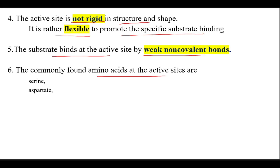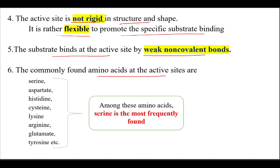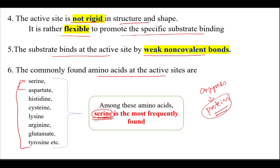The commonly found amino acids at the active site are serine, aspartate, histidine, cysteine, lysine, arginine, glutamate, tyrosine, and others. Among these, serine is the most frequently found amino acid. Since enzymes are protein in nature and proteins are made of amino acids, these are the most commonly seen amino acids at the active site, with serine being the most frequent.